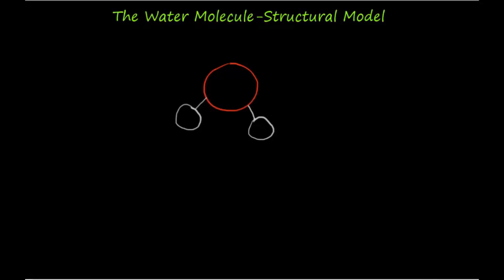Let's quickly review some details from the structural model of water. The molecule consists of three atoms arranged in the approximate configuration illustrated here. The single oxygen atom has a weight of 15.99 grams in atomic mass units and corresponds to element number 8 of the periodic table of elements. Though it has eight electrons, its outer shell contains the six electrons available for bonding with other atoms, which I am placing around the oxygen atom in our model.